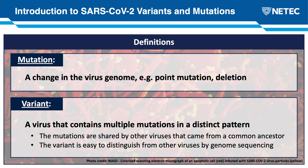A mutation is a very specific change in the virus genome — most often a point mutation where one nucleotide changes to another, or one amino acid changes to another; there can also be deletions. A variant, on the other hand, is a virus that contains multiple mutations in a distinct pattern. These mutations are shared by a group of viruses descending from a common ancestor. On a practical level, a variant is easy to distinguish from other viruses by genome sequencing — when there's a constellation of mutations in a distinct pattern, that's when we call something a variant.